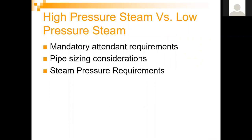Some considerations of high pressure versus low pressure steam: in California, high pressure has a mandatory attendant requirement, which is a big consideration. There are also pipe sizing considerations — low pressure steam has much larger pipe sizing requirements because you're sizing the pipe based on velocity, and steam is a compressible gas. Pipe sizing for low pressure steam is exponentially larger than for high pressure steam when transferring the same BTUs. There are also steam pressure and temperature requirements — if a process needs higher temperatures, you may need higher pressure steam.